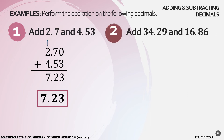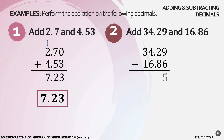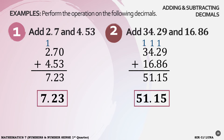Example number 2: add 34.29 and 16.86. Write the decimals in vertical form. 9 plus 6 is 15, carry 1. 1 plus 2 plus 8 is 11, carry 1. 1 plus 4 plus 6 is 11, carry 1. 1 plus 3 plus 1 is 5. So the answer is 51.15.